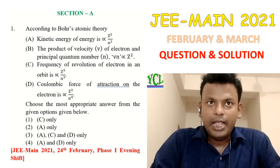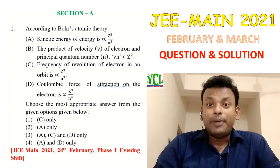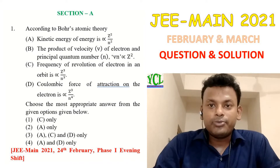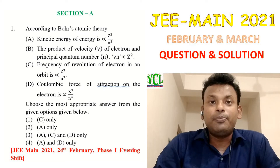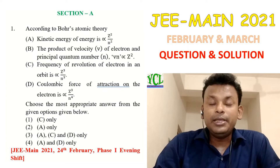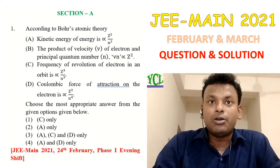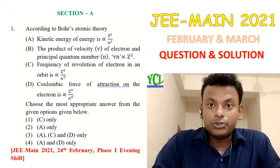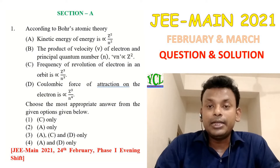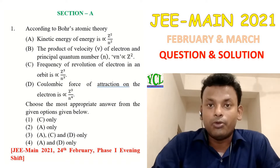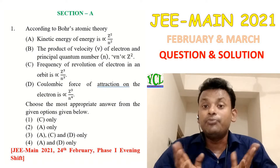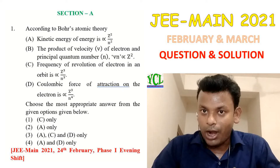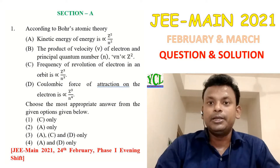Question number one: According to Bohr's atomic theory — (A) kinetic energy of an electron is directly proportional to Z² / n²; (B) the product of velocity of electron and principal quantum number n is proportional to Z²; (C) frequency of revolution of electron in an orbit is proportional to Z³ / n³; (D) Coulombic force of attraction on the electron is proportional to Z³ / n⁴. Choose the most appropriate answer. This question was set in 2021, 24th February, phase one, evening shift.